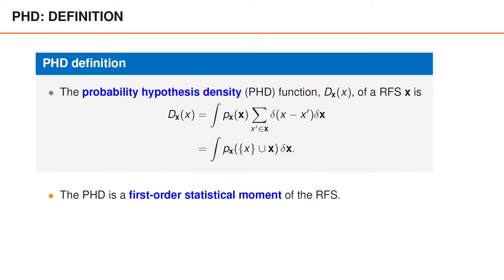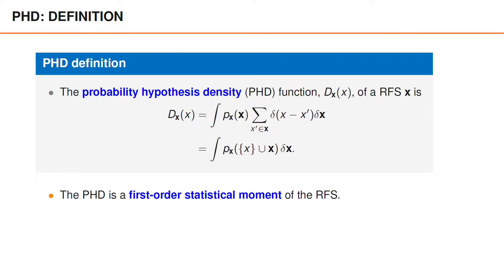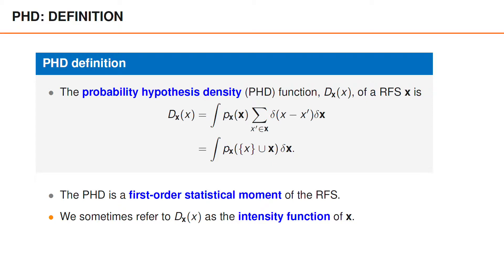It is possible to view the PHD as a first-order statistical moment of the random finite set. In some sense, it can therefore be thought of as an extension to random finite sets of the expected value, which is the first-order moment for vectors. The PHD is also sometimes referred to as the intensity function of the random finite set, even when the random finite set is not a Poisson RFS.